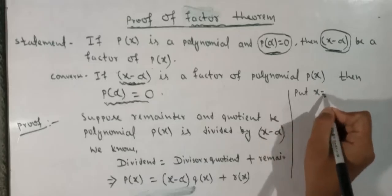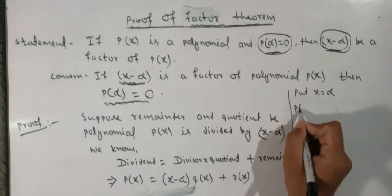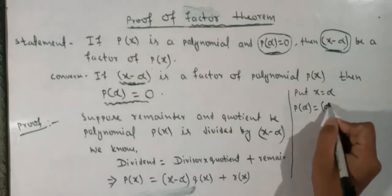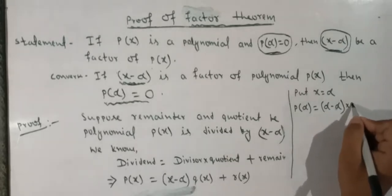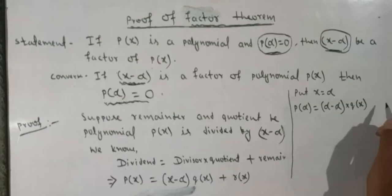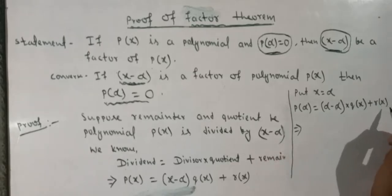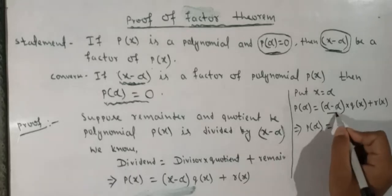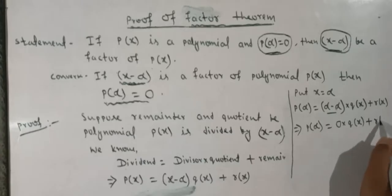Now we put x equal to alpha. In place of x we write alpha, so we have: p(alpha) equals (alpha minus alpha) into q(alpha) plus r(alpha). You can replace x with alpha here as well.